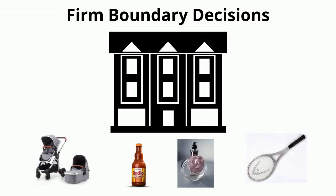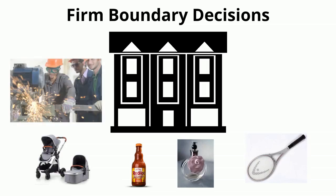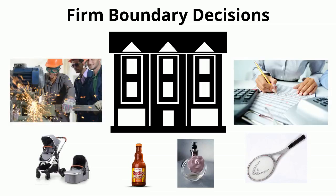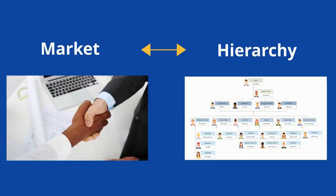When managers are trying to decide what products the firm should be in, or whether activities such as manufacturing or accounting should be in-house or outsourced, these are all firm boundary decisions. To understand firm boundary decisions, it's useful to first think about the continuum that lies between arm's length relationships of market transactions versus the hierarchical relationships in organizations.